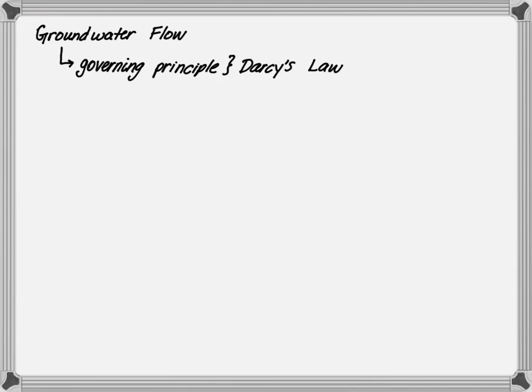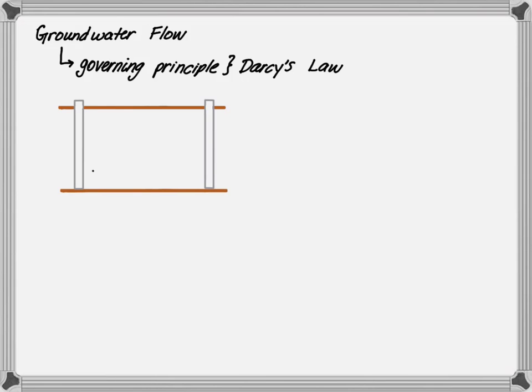The governing principle for groundwater flow is Darcy's law, and that's why it's very important that we understand it. First, imagine that we have a ground layer where the top refers to the ground surface and the bottom is an impermeable layer. We install two wells and we measure the water surface in both, creating a water surface profile or a water table.